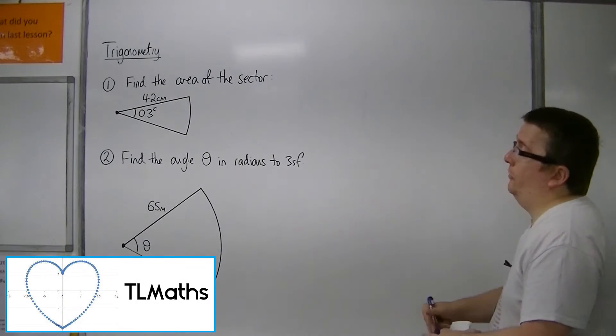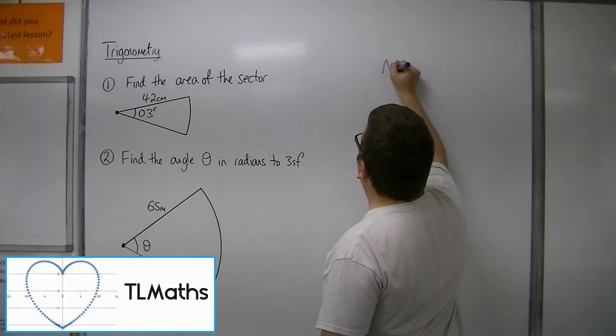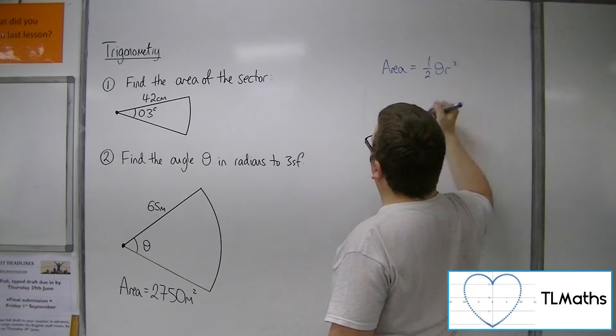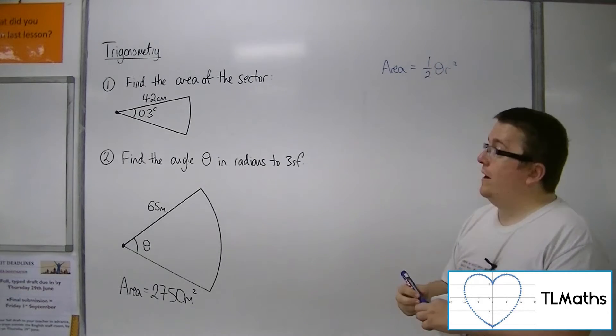To solve both of these problems, I'm going to need to remember that the area of a sector is equal to 1 half theta r squared, where theta is given in radians.